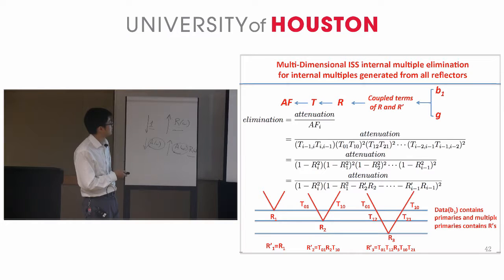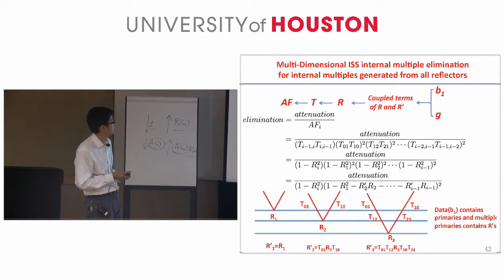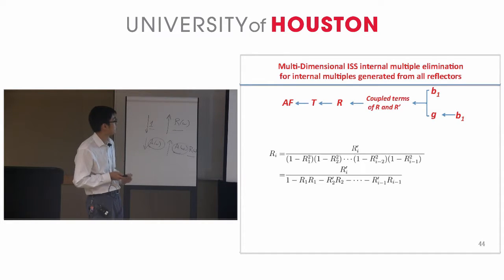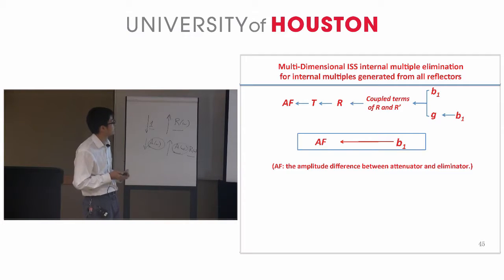We have a couple of terms of R and R-prime, and the data contains R-prime. We also need R, but since we don't have it directly, we introduce an intermediate function G which contains R. We can then use higher order terms of the data to calculate G. So G is also a higher order term of the data, and we now have a way to use higher orders of B1 to remove the attenuation factor.